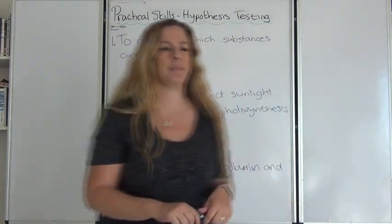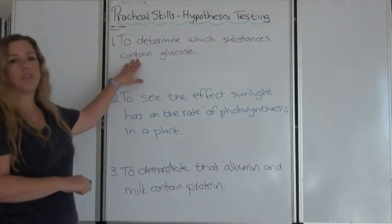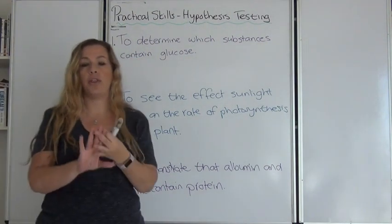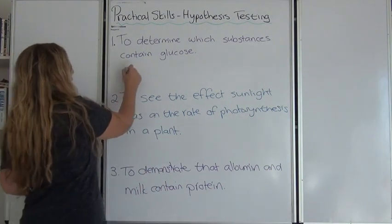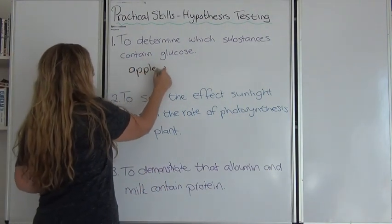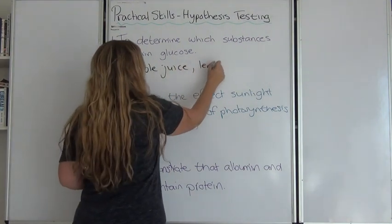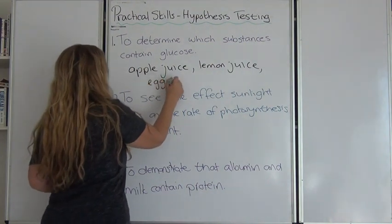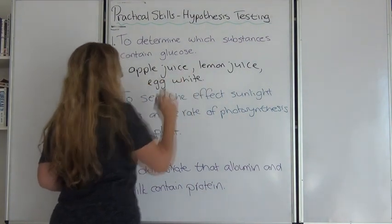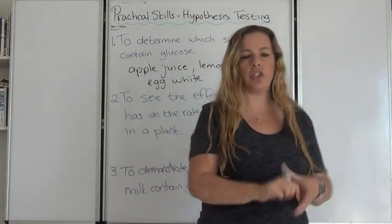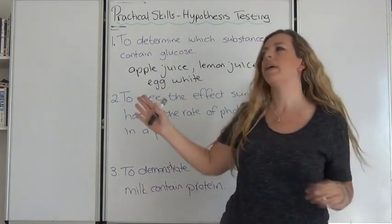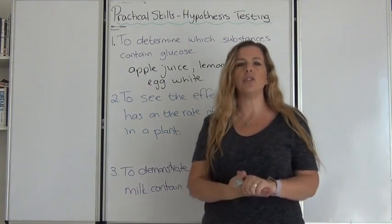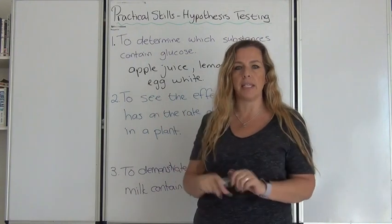Let's look at the first aim: to determine which substances contain glucose. You can be given three different solutions — apple juice, lemon juice, and egg whites. There you have three different solutions in front of you and you need to work out which of these substances contain glucose. So the first thing you need to do is work out a hypothesis from this aim.